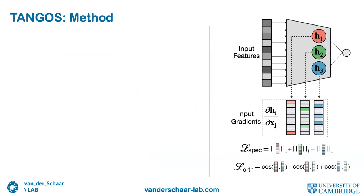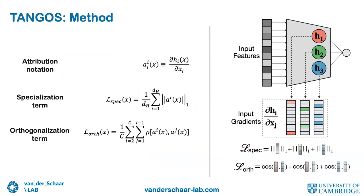TANGOS regularization defines the gradient of latent neuron i with respect to input feature j as an attribution capturing how that neuron attends to each input feature. TANGOS consists of two terms added to the standard task loss. The first promotes specialization by enforcing sparsity for each neuron's attributions using an L1 penalty. The second promotes orthogonalization between attributions of different neurons by penalizing correlation between attributions for all possible pairs of neurons.